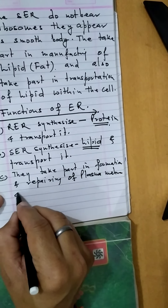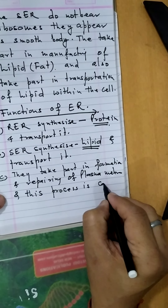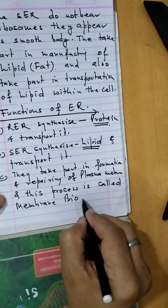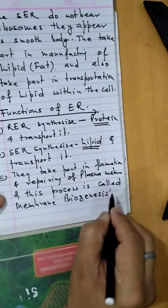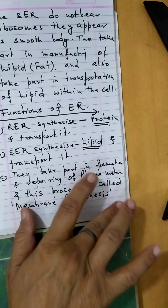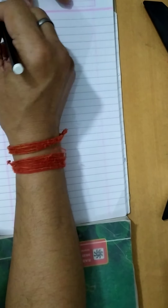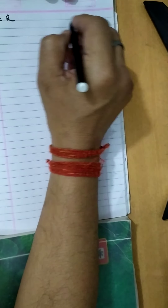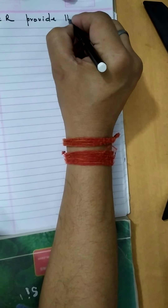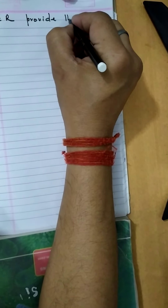As you know, the plasma membrane is made up of lipid plus protein. So they take part in formation and repairing of the plasma membrane, and this process is called membrane biogenesis.